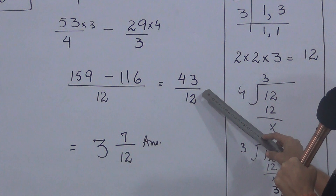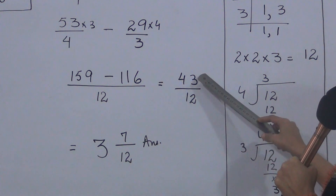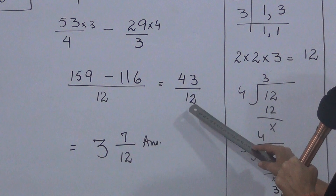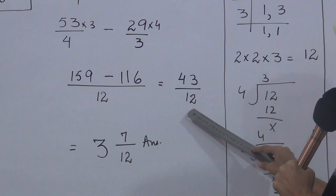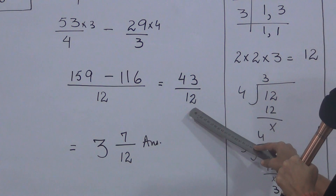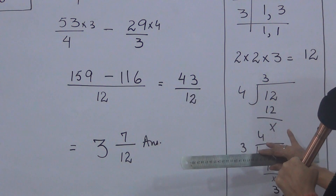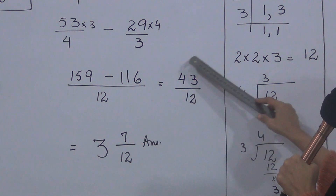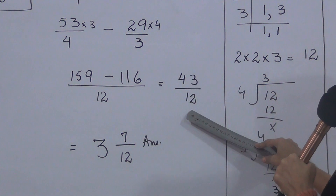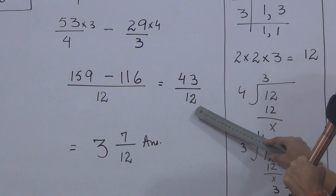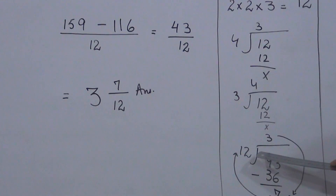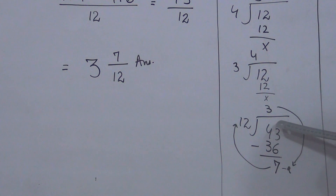We observe: first, can it be divided by any common table? No. Second, is the denominator smaller than the numerator? Yes — denominator 12 is smaller and numerator 43 is bigger, which means it is an improper fraction. So we can convert this value into a mixed number. 43 divided by 12: 12 × 3 = 36, and 43 − 36 = 7. So the remainder is 7.